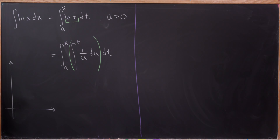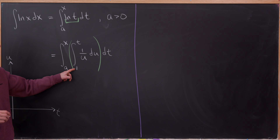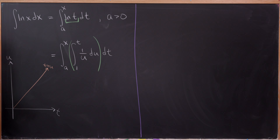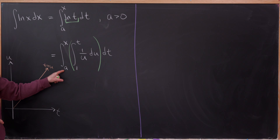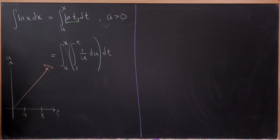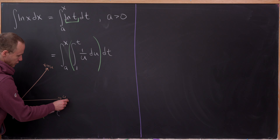Let's make a picture so we know what's going on. Let's say t is on this axis and this is the u-axis. Here u is being integrated from 1 up to t, so we need the line u equals t on here. And notice that the t values are going between a and x, so let's put t equals a here and t equals x out here. We're also going to need the u equals 1 line, which is a horizontal line.